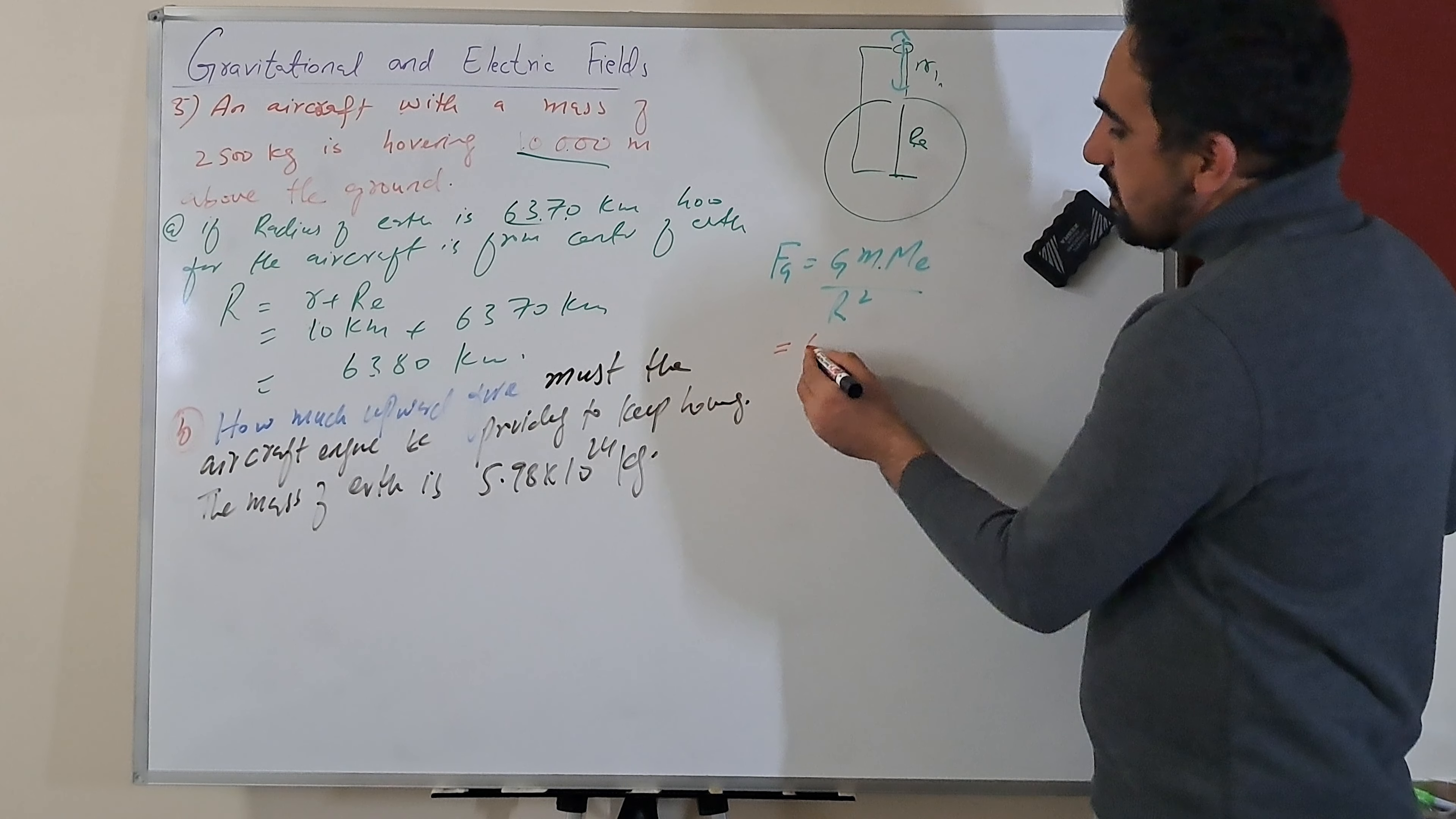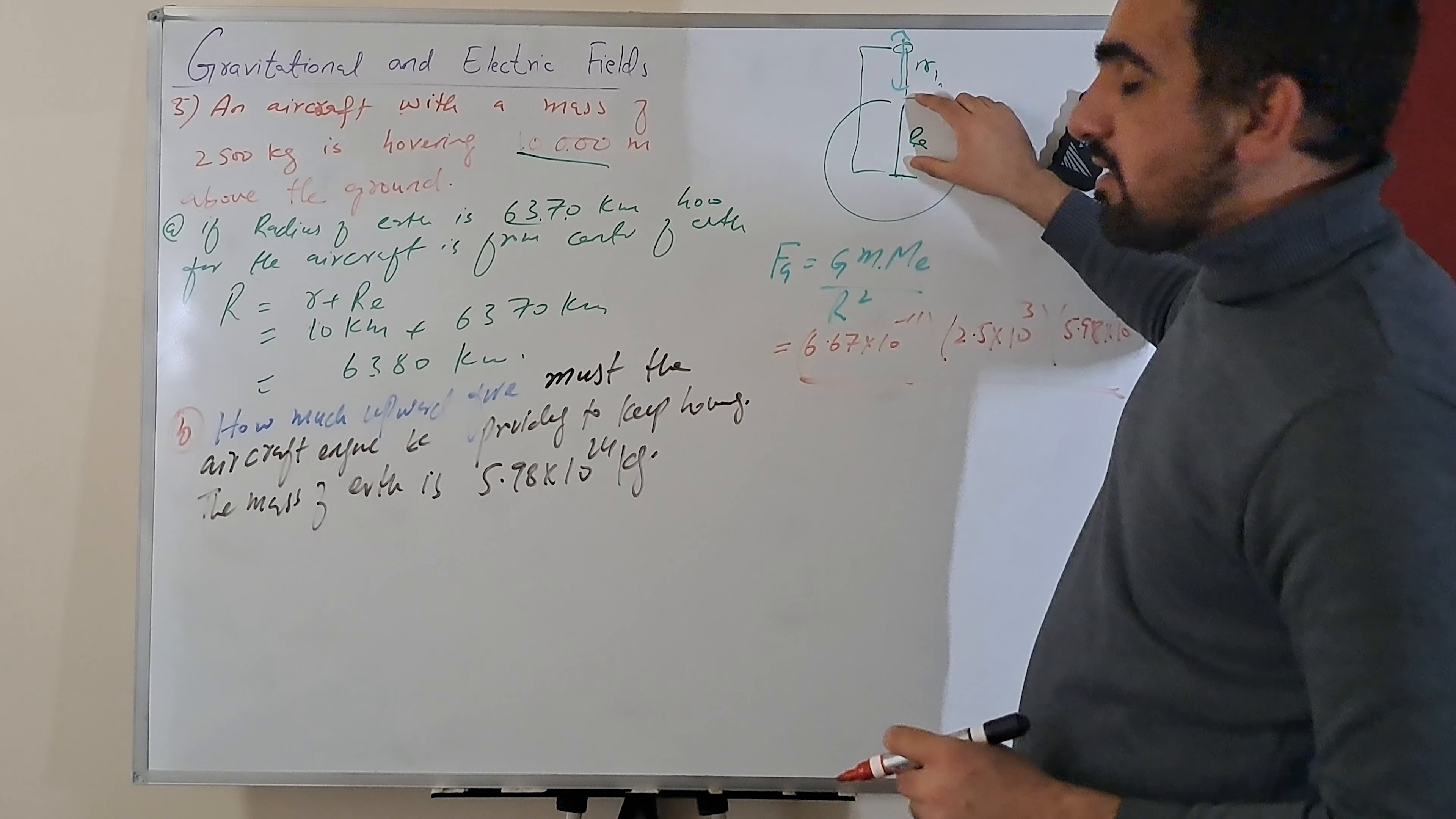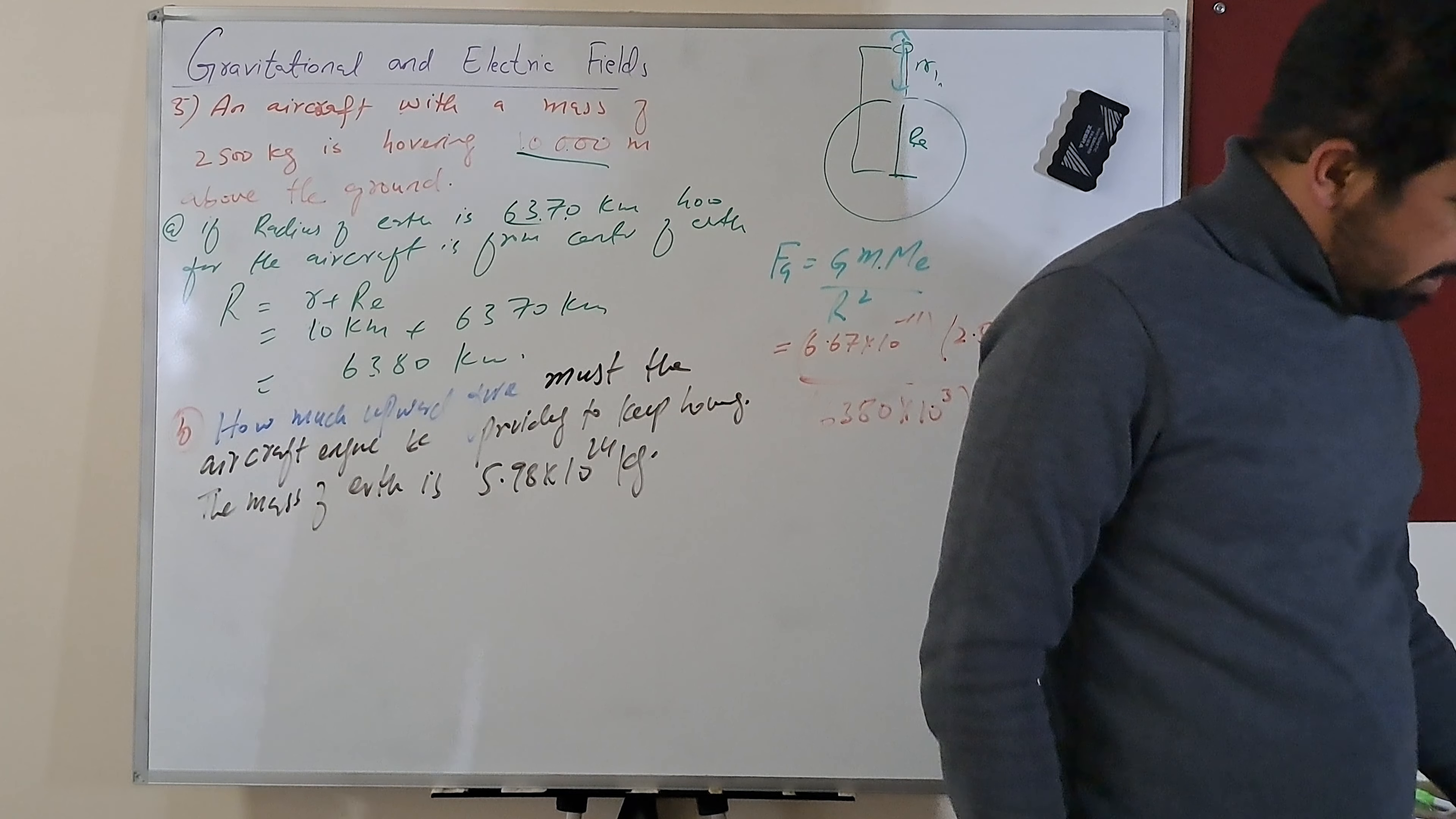G is 6.67 times 10 to the power minus 11, mass of aircraft is 2,500 kilograms so it's 2.5 times 10 to the power 3, and mass of Earth is 5.98 times 10 to the power 24, divided by r, the distance between the radius of Earth plus the distance between the surface of Earth and aircraft, which we found is 6,380 times 10 to the power 3 squared. Always when you are solving this type of problem, keep in mind that we're using System International units. Take extra care of units we are using.